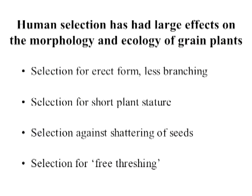An enormous diversity has been created over time due to human selection, which has an enormous effect on the morphology and ecology of these grain plants. Humans have selected for erect form and less branching because these are easier to grow and harvest — unlike lawn grass with tillers and stolons, upright grass is much easier to plant and harvest. There's been selection for short plant stature, making it easier to harvest, and selection against shattering of seeds, since plants naturally want to disperse their seeds but we want them in place for harvesting.